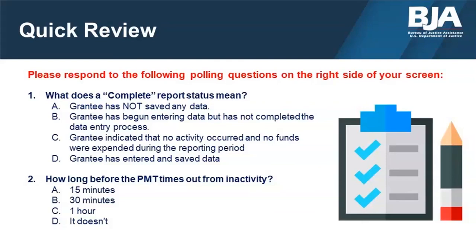Thank you for answering our polling questions. The answer to number one — what does a complete report status mean — is D: the grantee has entered and saved data. The answer to number two — how long before the PMT times out from inactivity — is B: 30 minutes.